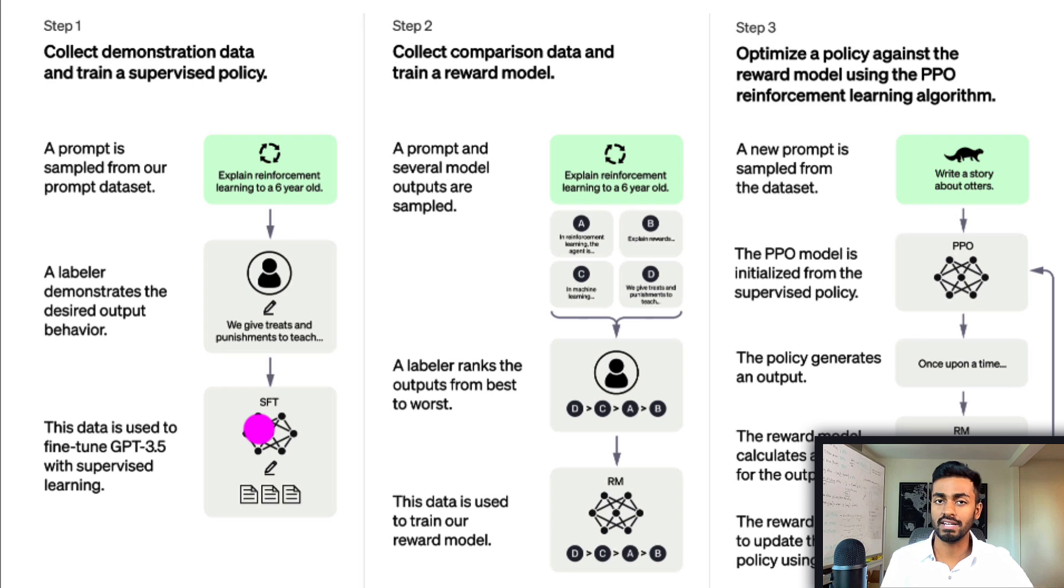In step two, we take this supervised fine-tuned GPT model and take in a user prompt to generate four different responses for that same prompt, or this could be any number of responses. We then have a labeler determine a reward for each of these outcomes, and this reward is proportional to the quality of the response to the initial prompt. Then we use this data to train a rewards model. The rewards model is a function - the input is a user prompt as well as one of the responses, and the output is some scalar value that determines how high quality is this response for this specific prompt. This is a GPT model with essentially a scalar output, and we use the rankings we generated from the past to train this rewards model.